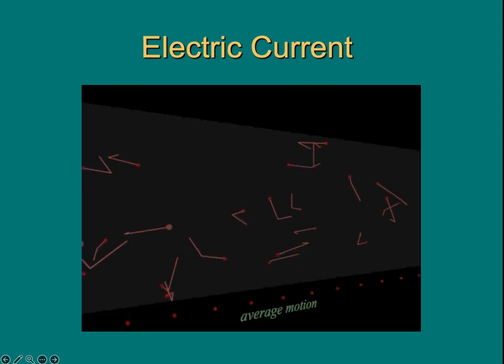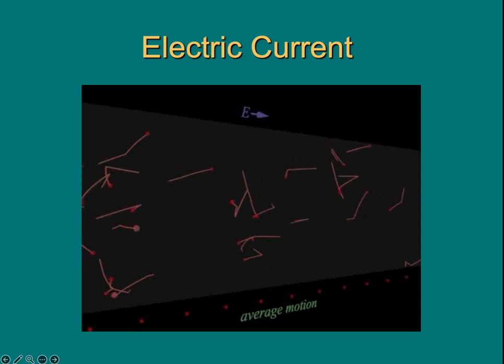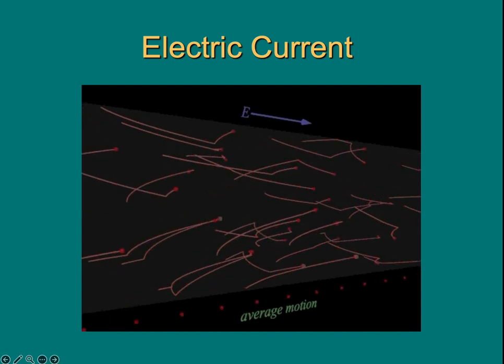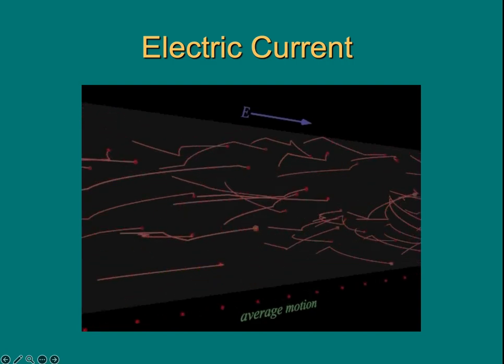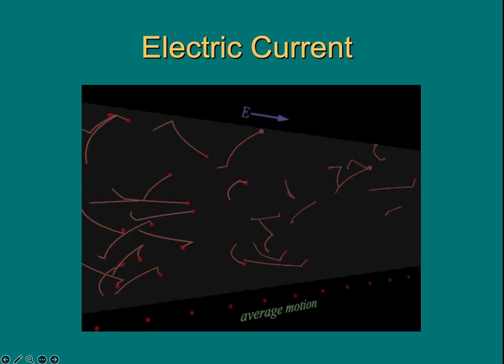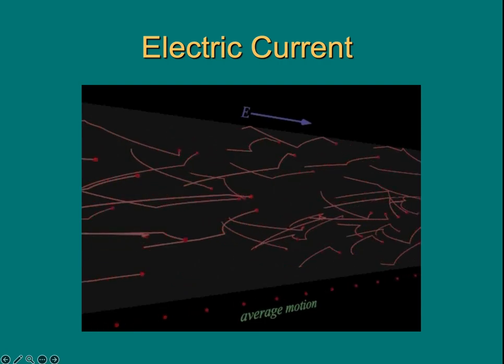This animation shows how current is generated. Without an electric field, the average drifting velocity of the electron is zero. After we apply an electric field, notice even though the electron is still bouncing in all directions, but on average there is a collective motion in the direction of the electric field.